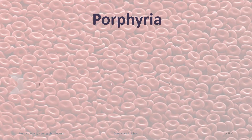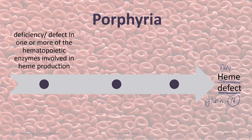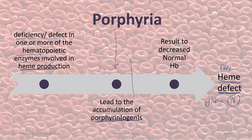Porphyrias are diseases characterized by impaired production of heme — there is a heme defect. The globin chains are all normal while the heme portion is abnormal. These are usually caused by a deficiency or defect in the enzymes used in heme synthesis. The term porphyria is used because these conditions lead to an increase of porphyrins or porphyrinogens, and this accumulation causes a decrease in normal hemoglobin.